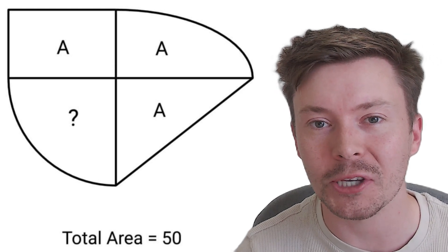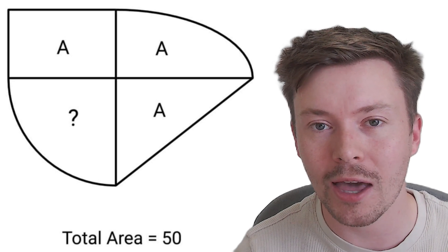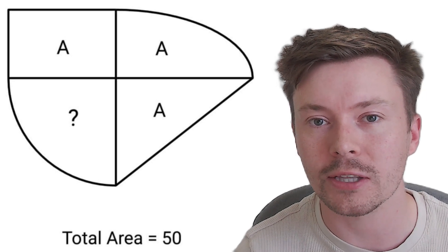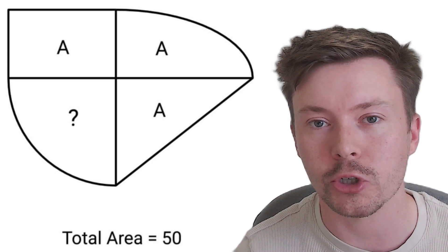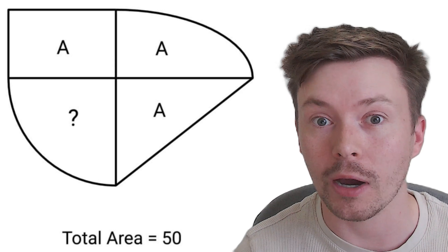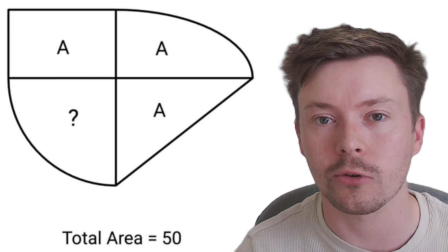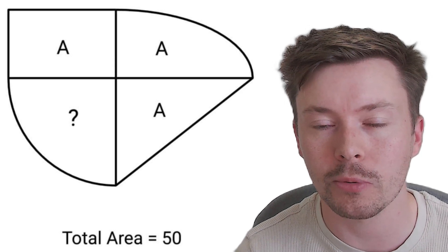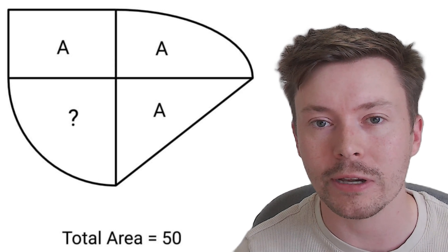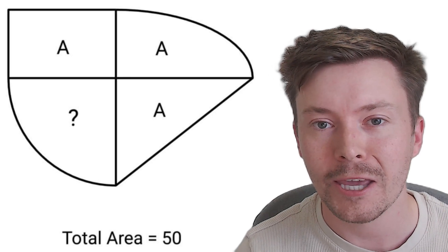The key assumption that you need to know is that there are four right angles in the centre of this shape, just so that you have got a quarter circle and you have got the base and perpendicular height of the right angled triangle there.